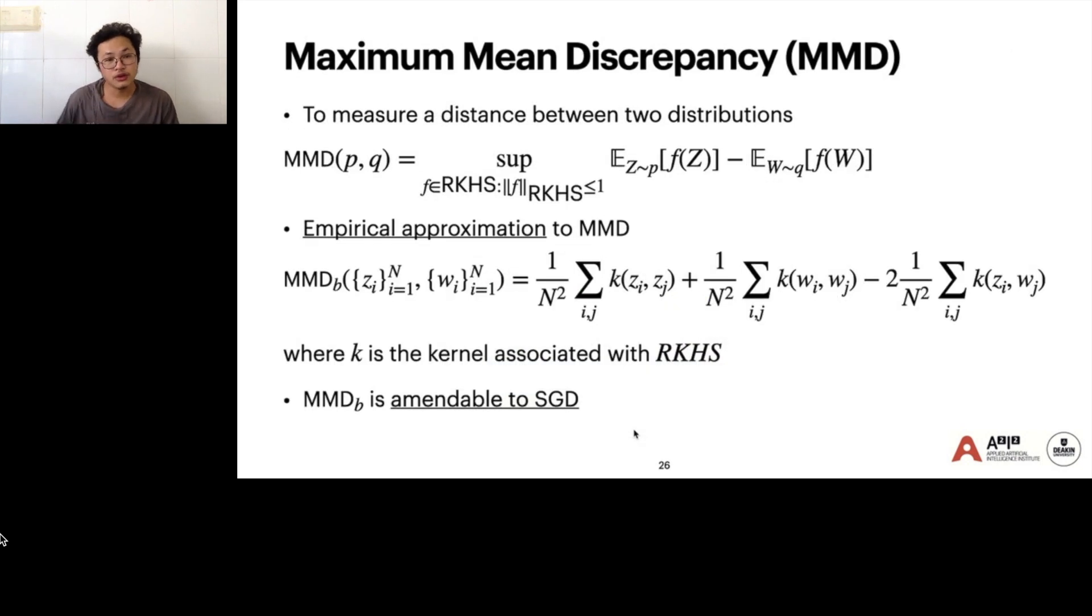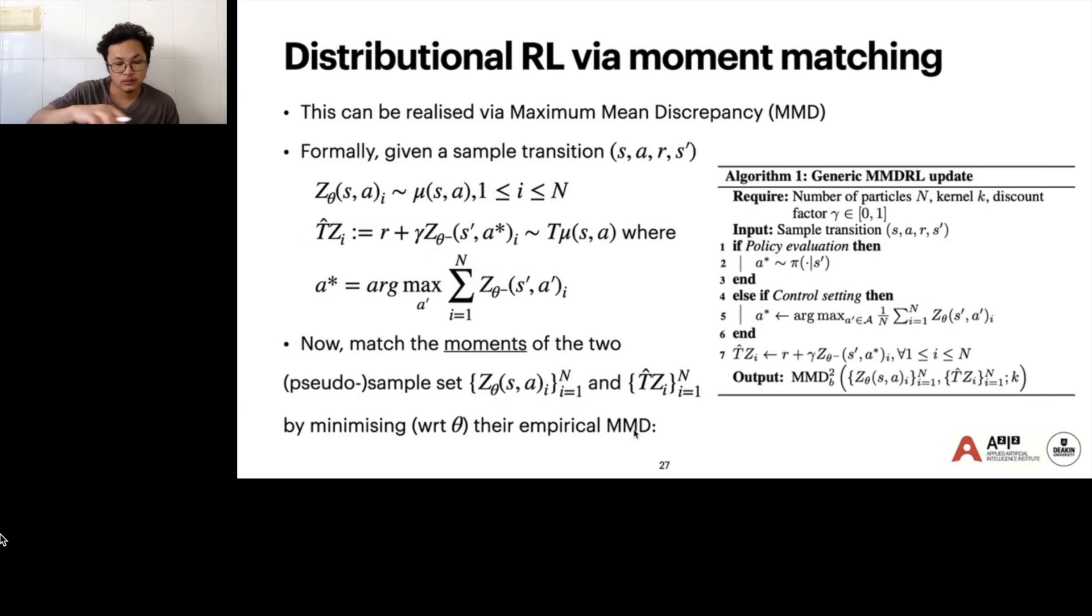To realize this, we use the distance of maximum mean discrepancy, MMD. It basically measures the distance between two distributions and it has empirical approximation, which is easily computed in practice and is amenable to stochastic gradient descent. The idea of the algorithm is that given a sample transition (s, a, r, s'), first we compute a set of N pseudo-samples of μ, then we compute a set of N Bellman target particles T-hat Z_i, and then we match the moments of these two pseudo-sample sets together via minimizing with respect to θ the empirical MMD distance.